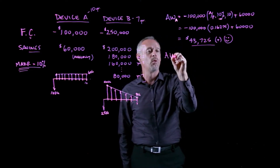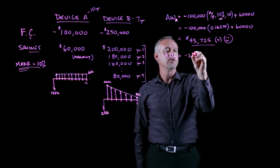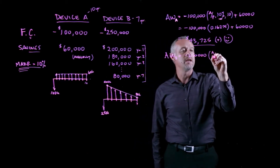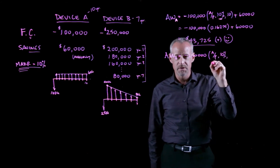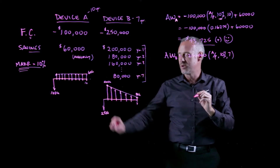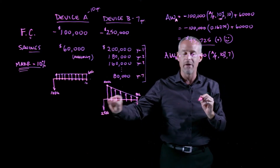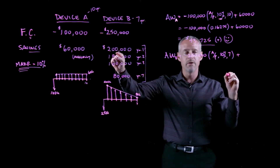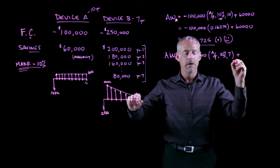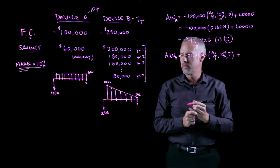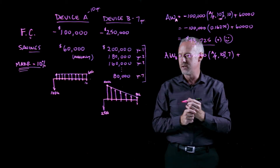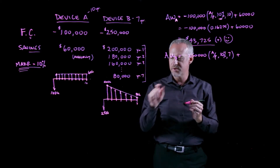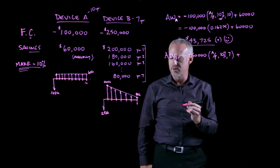For the annual worth of device B, we have −$250,000 times the A given P factor for 10% over seven years. Then we add the benefits: the $200,000 that decreases each year. The arithmetic gradient we learned about went the other way — increasing amounts — so this declining pattern doesn't fit the typical arithmetic gradient directly. We need a trick.